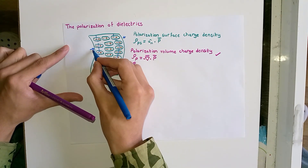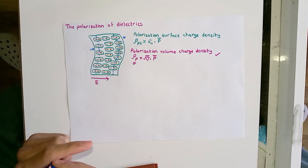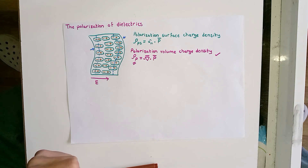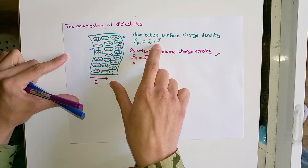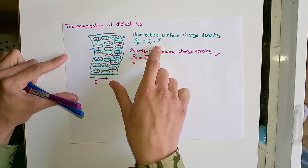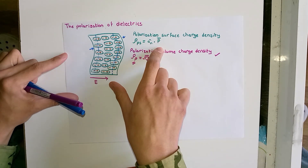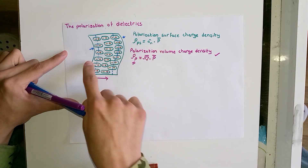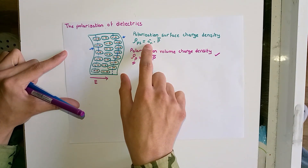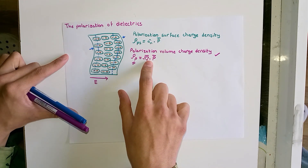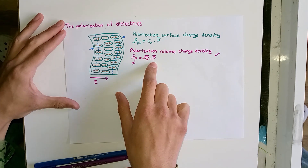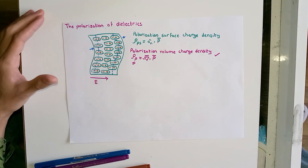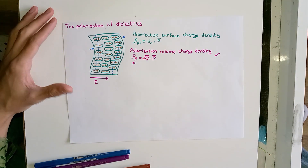The surface charge density is equal to the dot product between the normal vector and the polarization vector — in other words, it is the component of polarization perpendicular to the surface, aligned with the normal vector. The volume charge density is equal to the negative divergence of the polarization vector.